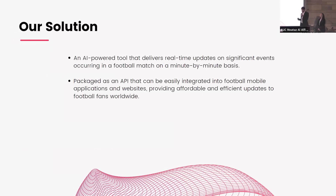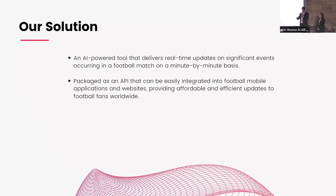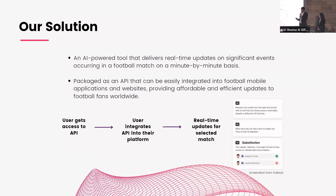These are all challenges that we saw, and our product provides a solution to all these challenges by offering an AI-powered tool that delivers real-time updates on significant events occurring in a football match on a minute-by-minute basis. Our product is packaged as an API, which makes it very simple to integrate into existing systems, mobile applications, and websites, and it provides affordable and efficient updates to football fans worldwide. Using our product is very simple — the user simply purchases access to the API, integrates it into their platform, and gets real-time updates for the selected match. They can choose to display the updates in however way they please.